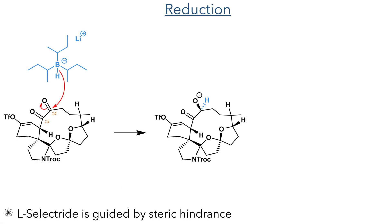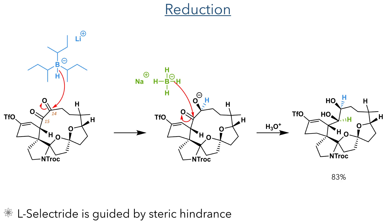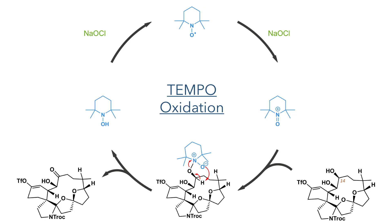Carbon-15 of this diketone needed to be stereoselectively reduced, but this could not be done directly. Instead, the carbonyl at carbon-14 was stereoselectively reduced using L-Selectride, a bulky reducing agent guided by steric hindrance. To this crude reaction mixture, sodium borohydride was then added — a much smaller reducing agent — and the hydride was able to add to the more sterically hindered carbon-15, generating the desired isomer in an 83% yield. Carbon-14 of this dihydroxy compound could then be selectively oxidized using a TEMPO oxidation, which is selective for the less sterically hindered C-14 position.